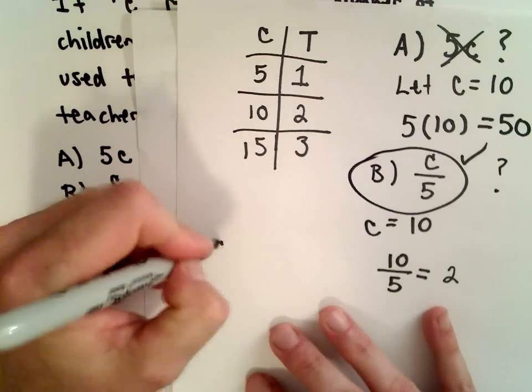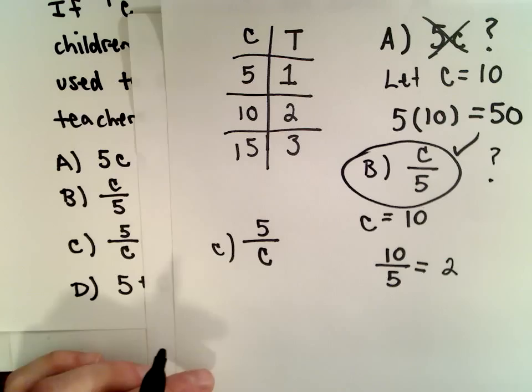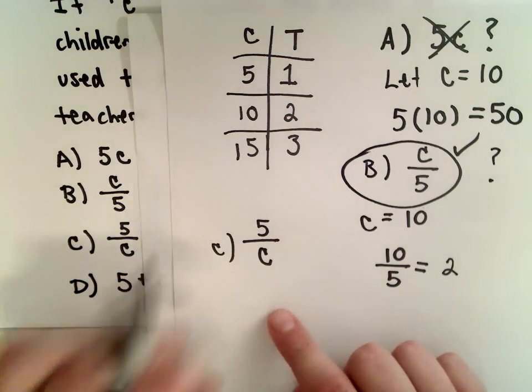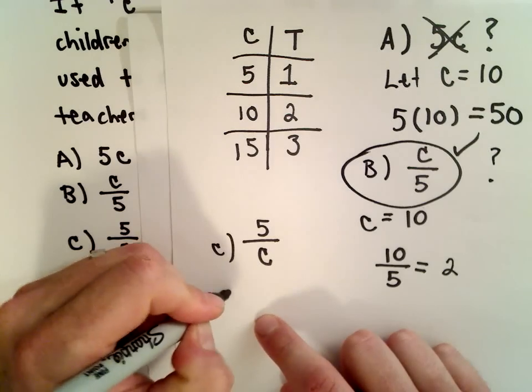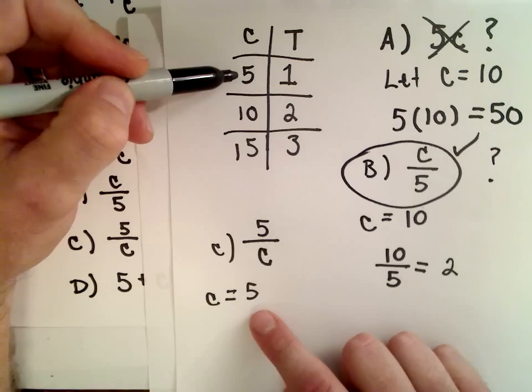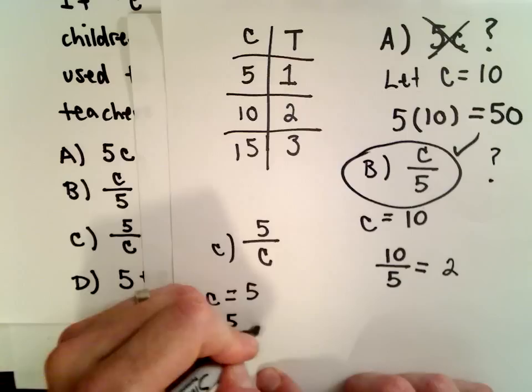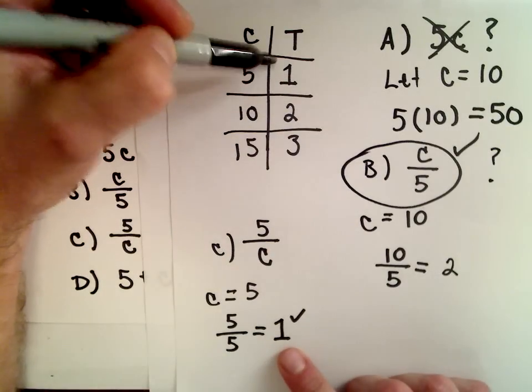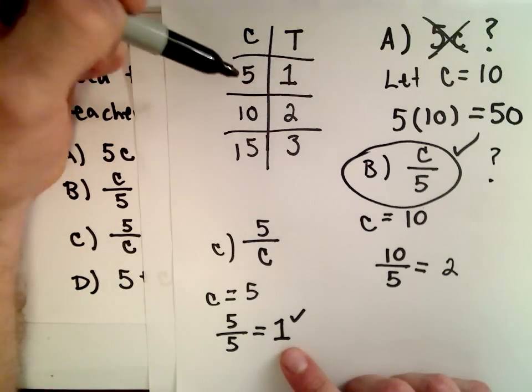Part C says five divided by the number of children. Let's see. You have to be careful, and this is why it's good to check a couple values. If we let C equal five, our expression gives five divided by five, which is one. That's how many teachers we need. So maybe part C works.